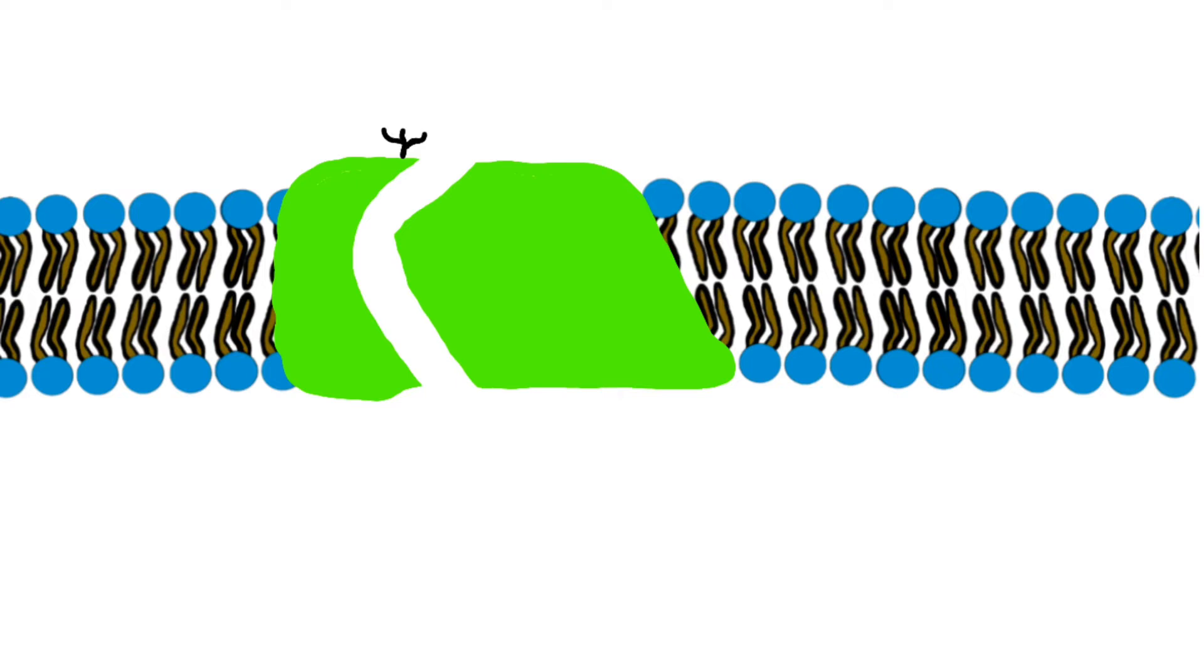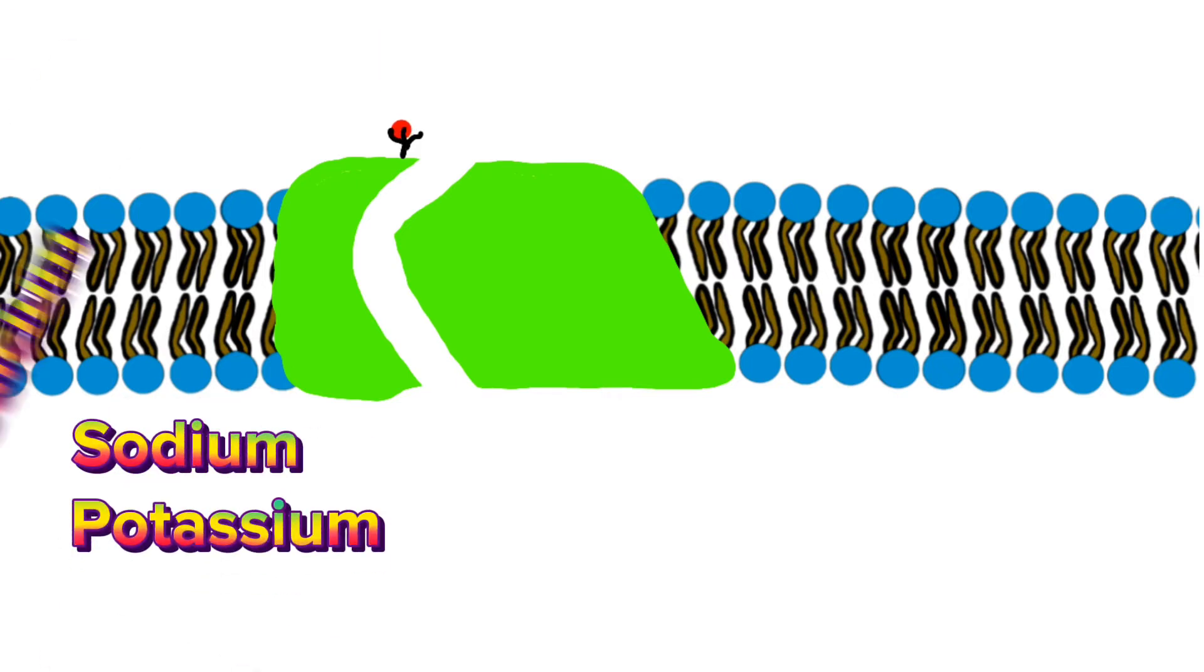Ions will be able to pass through their ion channels like sodium, potassium, and calcium, and large molecules will have their carrier proteins like glucose.